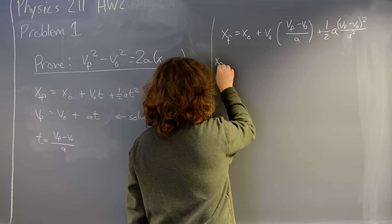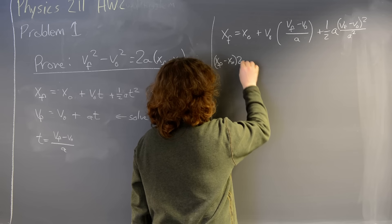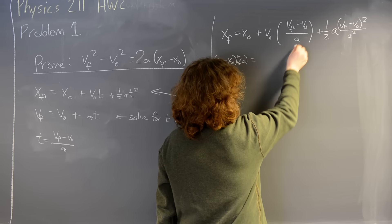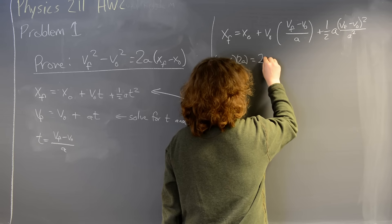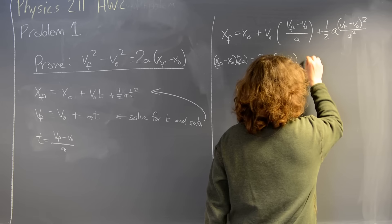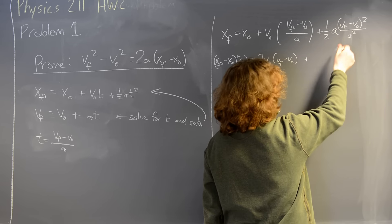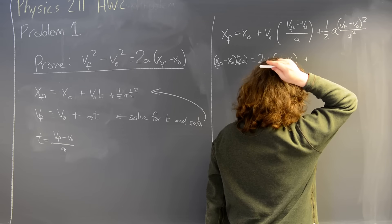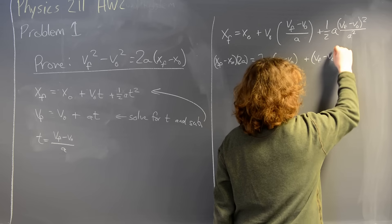So this gives me xf minus x0 all times 2a equals, let's see, the a that I'm multiplying by cancels this one. So I get 2v0 times, and since I'm multiplying by 2a, the two kills the one half. And I'm going to have a squared divided by a squared. So this gives me simply vf minus v0 squared.